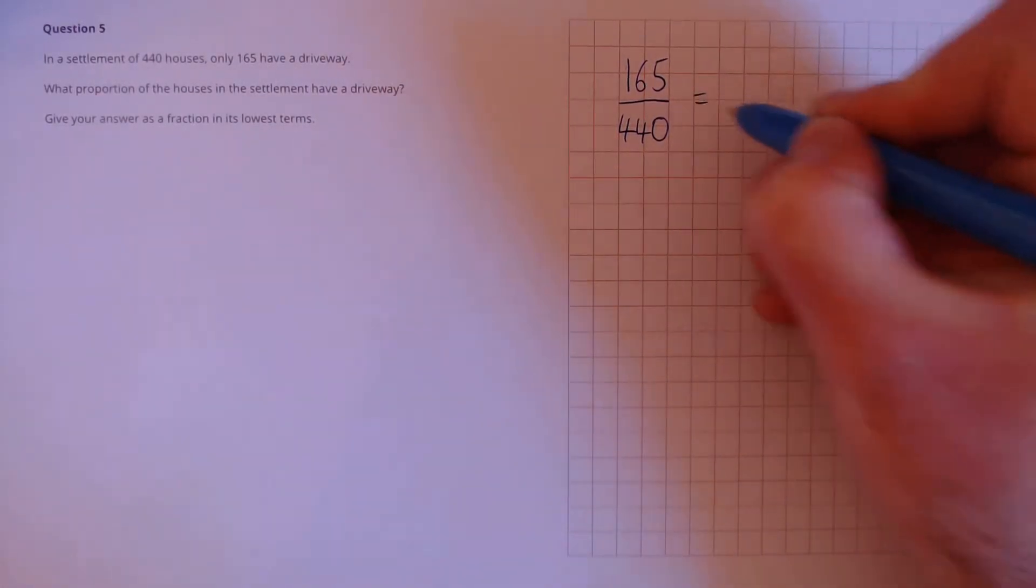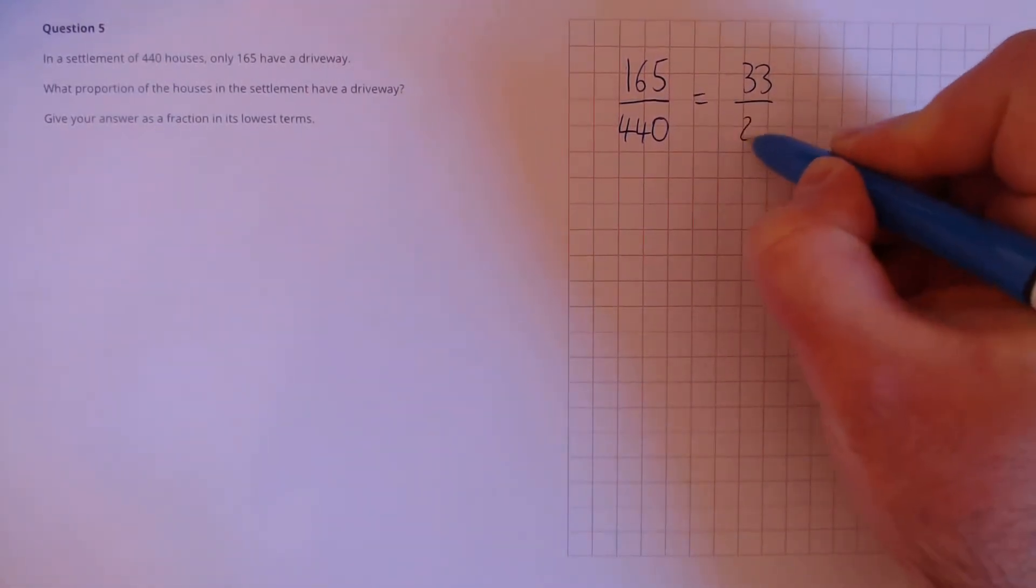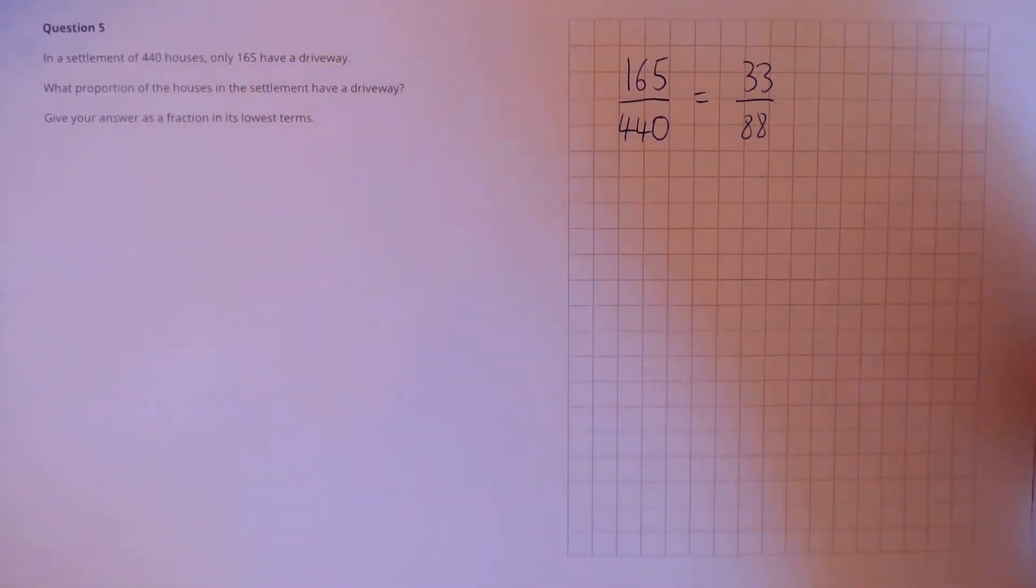So we can simplify this down to 33, that's 165 divided by 5, over 88, which is 440 divided by 5.